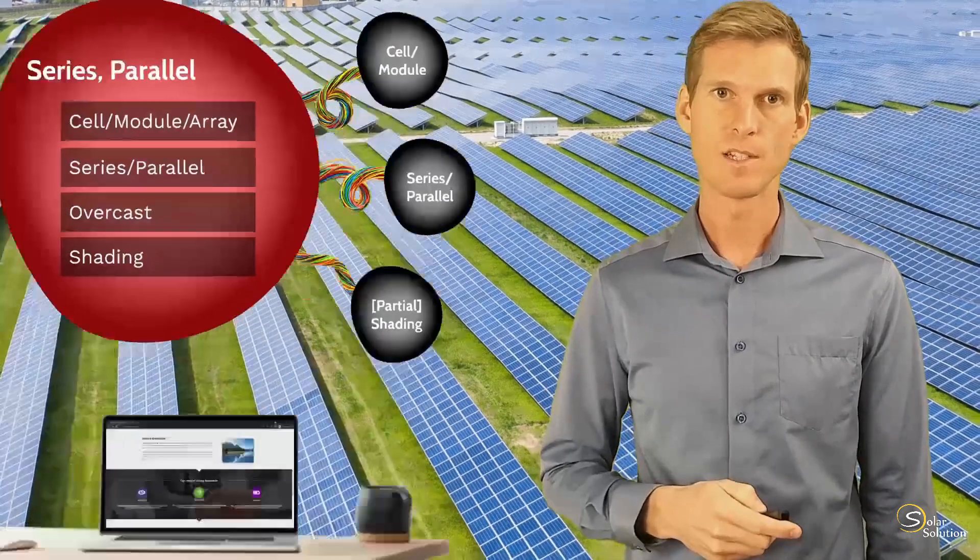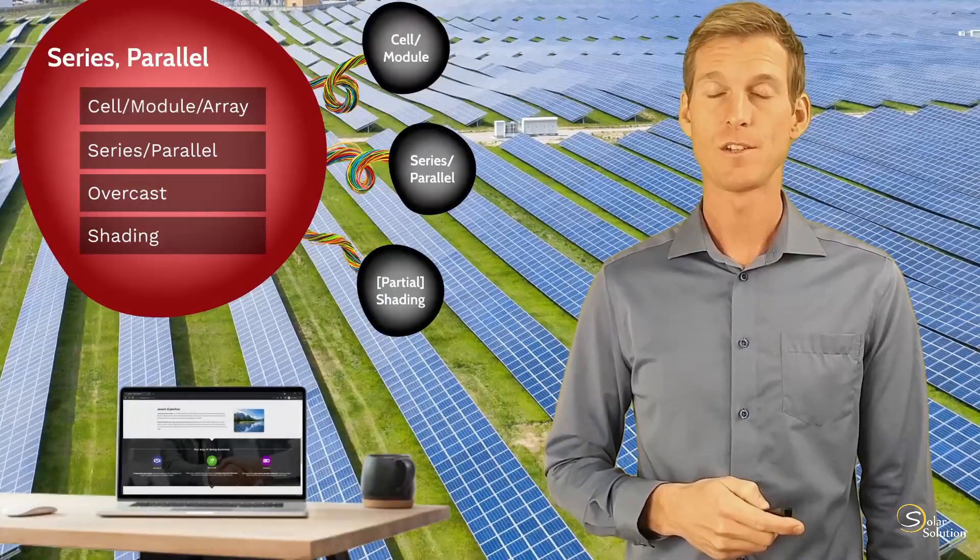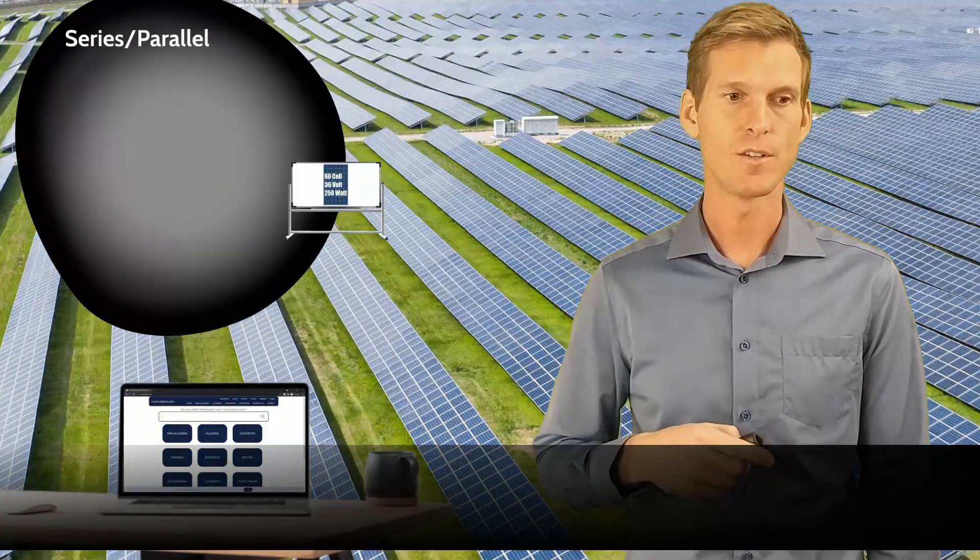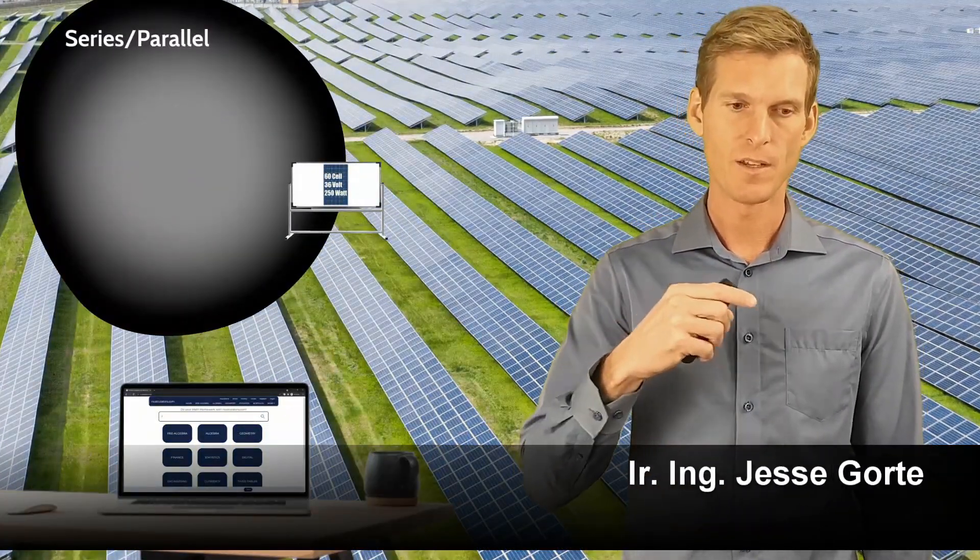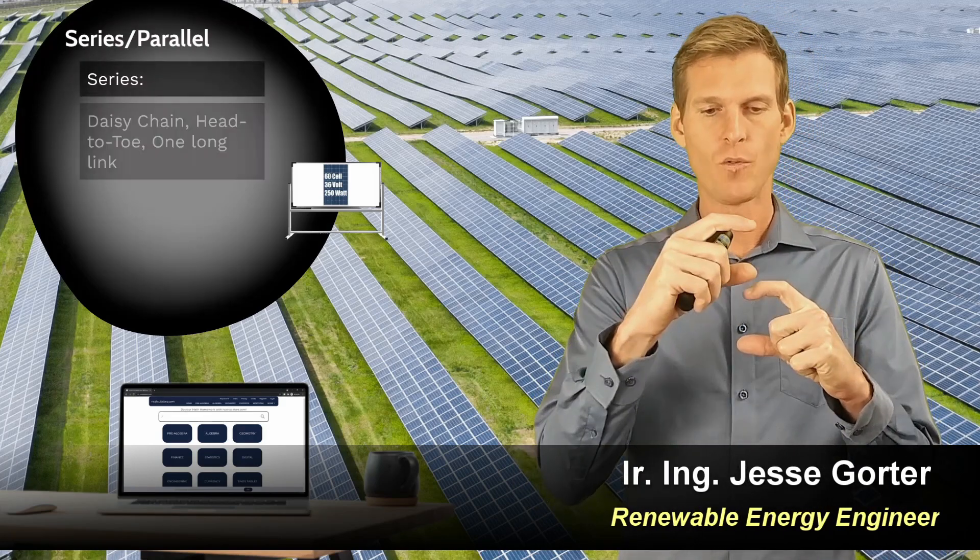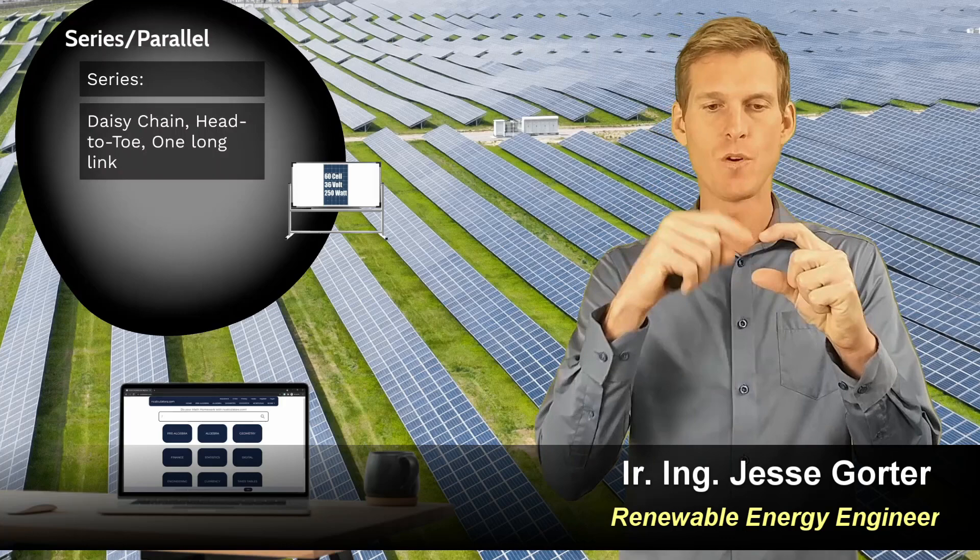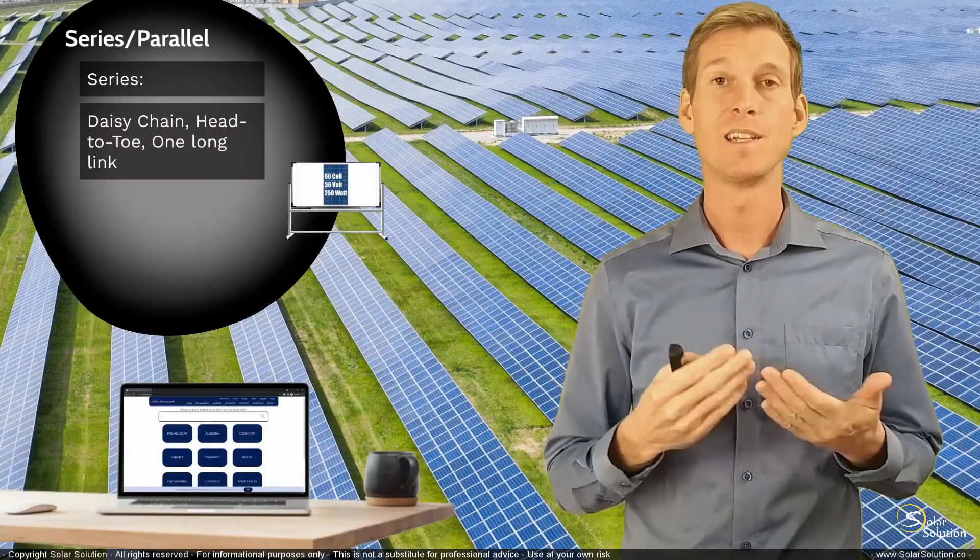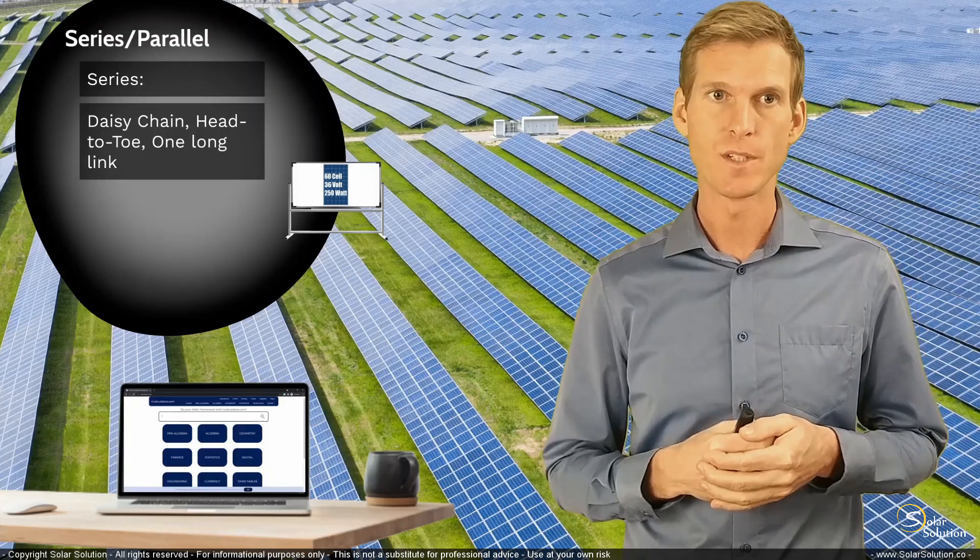So now let's go to the next one on series versus parallel connection. To put it into simple words, a series connection of cells or modules is some kind of a continuous daisy chain whereby you connect all the cells or the modules head to toe. It is one long string of cells or modules. So this is a series connection, an electrical series connection.